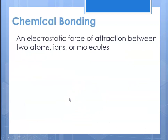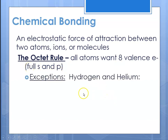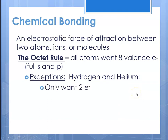Bonding is the electrostatic force of attraction between two atoms, ions, or molecules, and they're trying to follow the octet rule where all atoms want eight valence electrons — a full S and P sublevel. The exception to that rule is hydrogen and helium. They only need two electrons because they are the only elements in the first row of the periodic table, where there is only an S sublevel that can hold just two electrons.